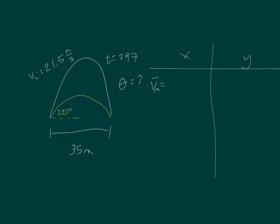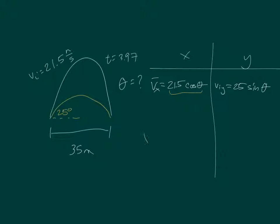Starting with v-bar-x: that equals vi, which is 21.5, times cosine theta. And vi-y equals 21.5 sine theta. I'm putting theta here because I don't know its value yet. The goal is to find theta — vi is given. So theta is embedded in another variable. You take the expression 21.5 cosine theta and plug it into the formula where you have v-bar-x. What's underlined in yellow goes in place of v-bar-x.